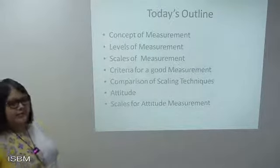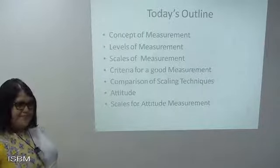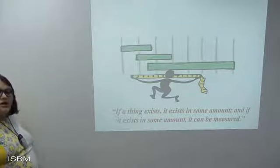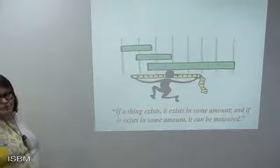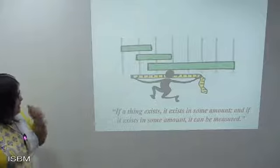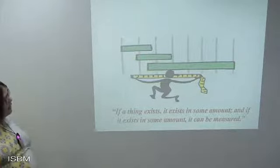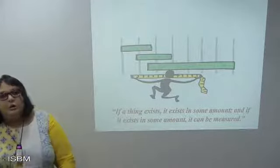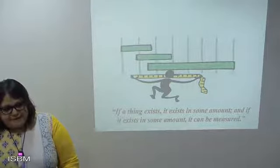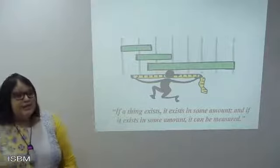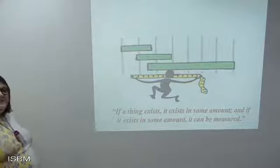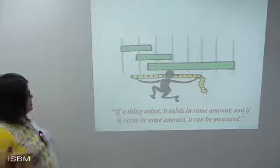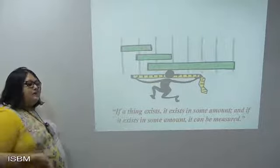E.L. Thorndike was a great social researcher — a sociologist as well as a psychologist — who said that if a thing exists, it exists in some amount, and if it exists in some amount it can be measured. Anything which exists will have either a quantitative or a qualitative value attached to it. Any matter can be quantified either physically through physical means of measurement, or it can be gauged through qualitative means.